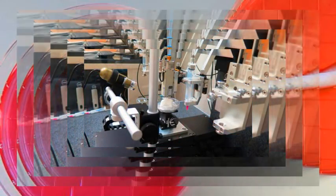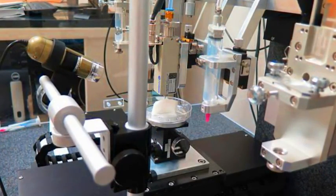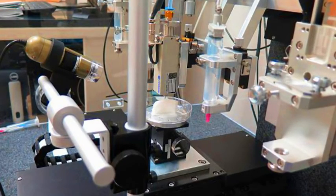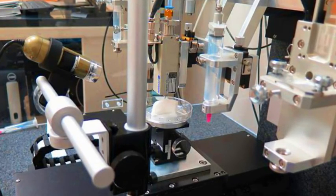In order to demonstrate that ITOP could generate complex 3D structures, scientists implanted human-sized ears beneath the skin of mice. Two months later, the ear shape was well maintained and cartilage tissue and blood vessels had formed.